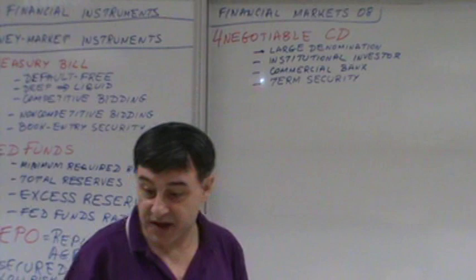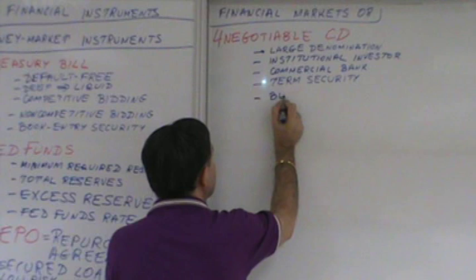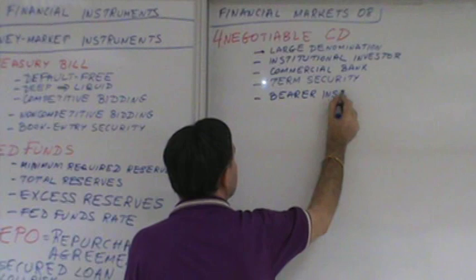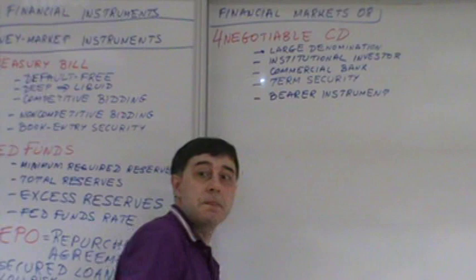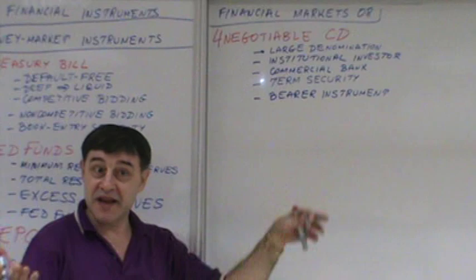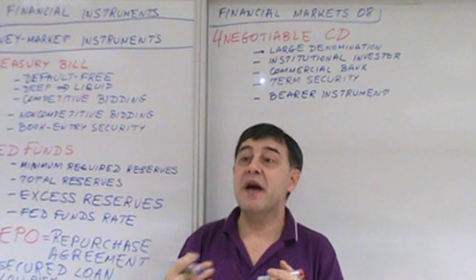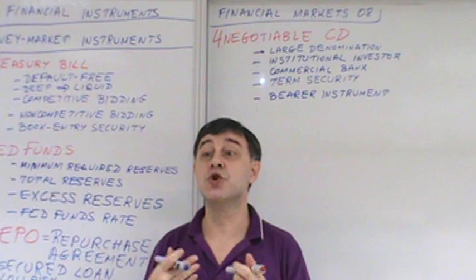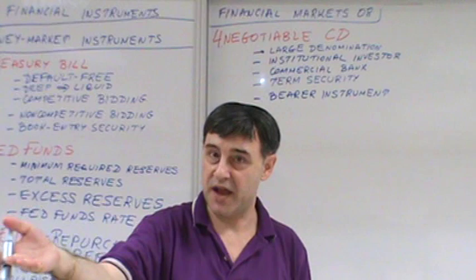It could be a 30-day negotiable CD, or 60-day, 90-day, 180-day, or 270-day negotiable CD. So basically it has a fixed term — a fixed maturity.